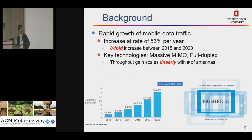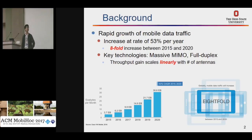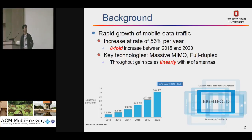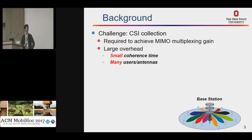I will give you some background information. As you all know, we have already seen the rapid growth of mobile data traffic, and there will be an eightfold increase between 2015 and 2020. There are several key technologies, such as massive MIMO and full-duplex, used to increase the data rate. Especially in massive MIMO, the spectral efficiency scales linearly with the number of antennas.